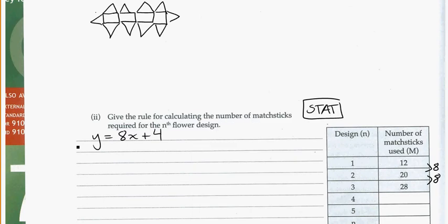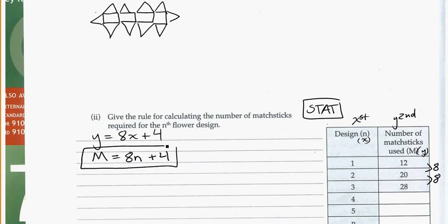So using STAT, we've got our rule, but we also need to make sure we use the appropriate variables. Remember, we always write X first, and then Y second. So this is going to be my X, and this is going to be my Y. So replacing those variables, the Y is the big M, is equal to 8, and X is the little n, plus 4. So this is my general rule for finding the nth flower design, again using STAT in the calculator.